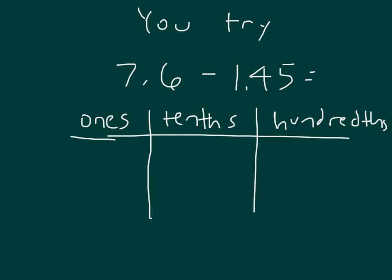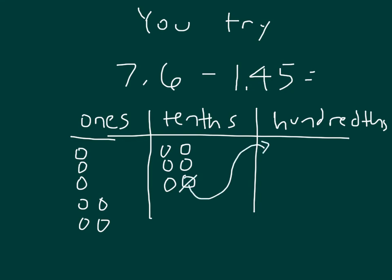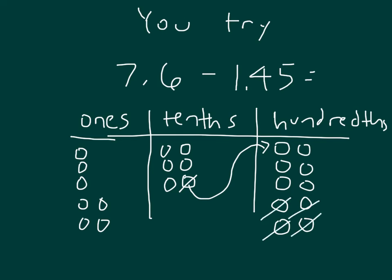To set it up, did you start with 7 and 6 tenths? Did you put the 7 ones in the appropriate spot — 5, 6, and 7? Did you place the tenths correctly and the correct number of them? We would actually regroup one of the tenths over to the hundredths place of that 7 and 6 tenths so that we can go ahead and subtract. So we have 1 and 45 hundredths that we're subtracting — counting 1, 2, 3, 4, and 5 for the hundredths.